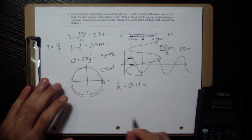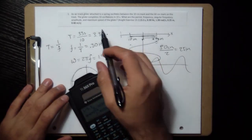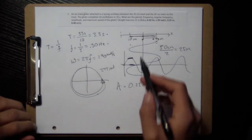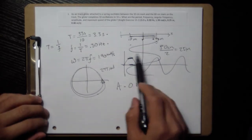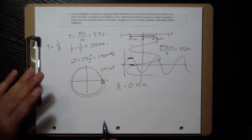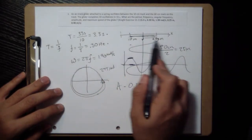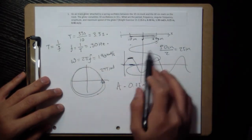And then the last thing is the maximum speed of the glider. To get this, there might be some formulas that you could find for the maximum speed of a sinusoidal system, something that's following like a sine wave like this. But if you didn't, then this is what you could do.